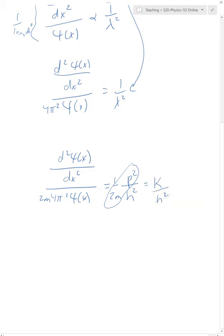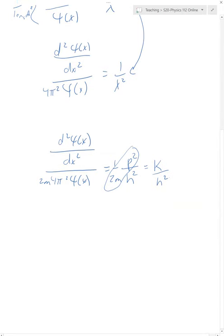All right, so we're getting somewhere now. You're going to be amazed at how quickly this fixes up. I'm going to do a couple of things. First of all, I'm going to bring my h squared over to the other side. So I'm going to have an h squared over four pi squared. It turns out that's just going to give us an h bar squared. So we're going to deal with that. I'm going to keep my one over two m over here. And I still have my d squared psi over dx squared. I'm going to start to stop including the dependence with x. You'll just have to remember it. And this is all equal to just k.